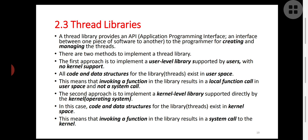The second method is to implement a kernel level library, which is supported directly by the kernel or operating system. In this second method, code sections and all data structures for the library or threads are present only at kernel level. So in kernel level, calling a function means indirectly calling the operating system or kernel for a particular service — that is called a system call to the kernel.